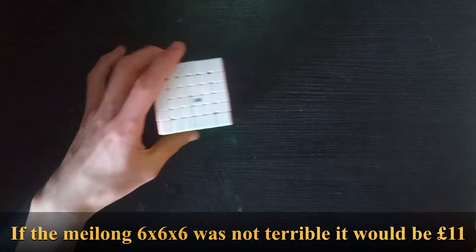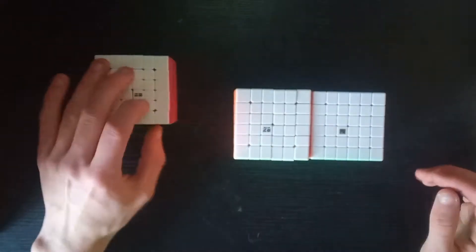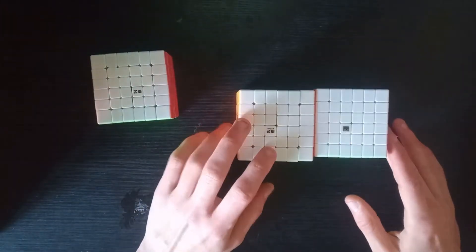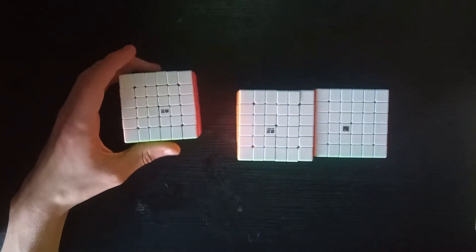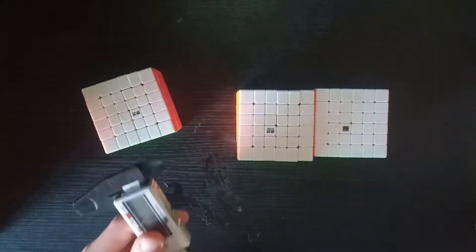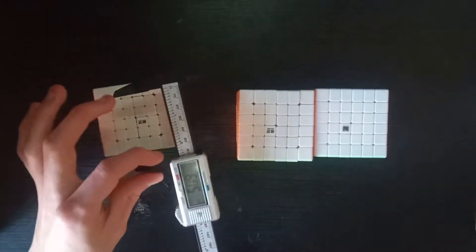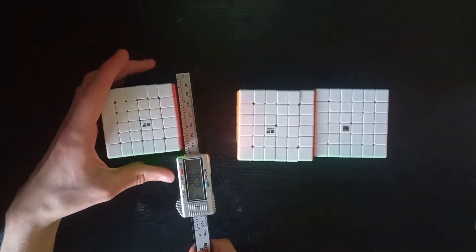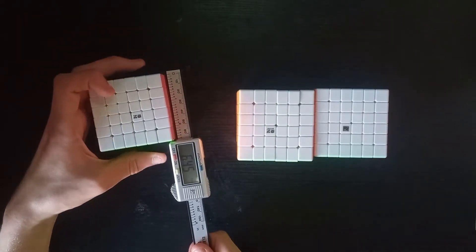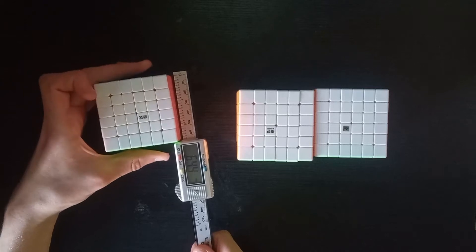The Chifan S and the Meilong 6x6 would probably also be sold at £11. However, it is quite an improvement on the Meilong 6x6. It's a bit smaller, but that's just general evolution of 6x6s.